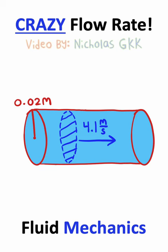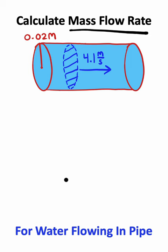Let me know in the comments if you got this problem right. We are trying to calculate the mass flow rate of water flowing through this pipe.